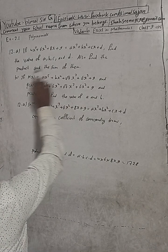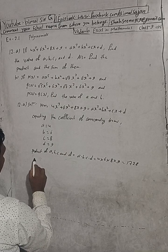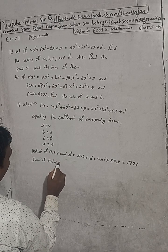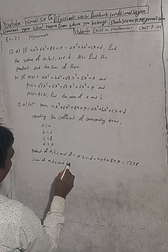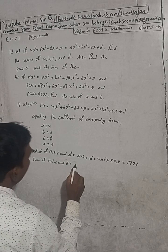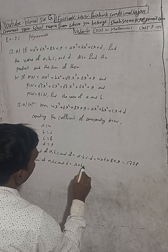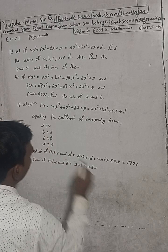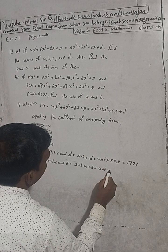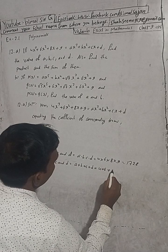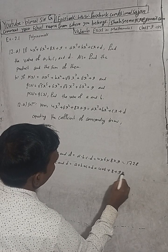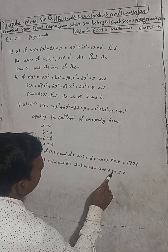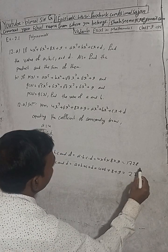Now we have to find the sum of a, b, c, and d. Sum = a + b + c + d = 4 + 6 + 8 + 9. Adding these: 4 + 6 = 10, 10 + 8 = 18, 18 + 9 = 27. So the sum is 27.